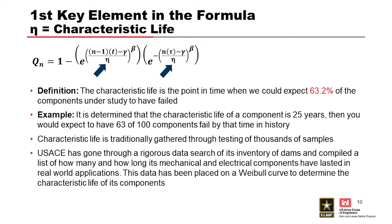An example is on an electric motor. If it's determined that the characteristic life of a component is 25 years, then you would expect to have 63 of 100 components failed by that time in history.